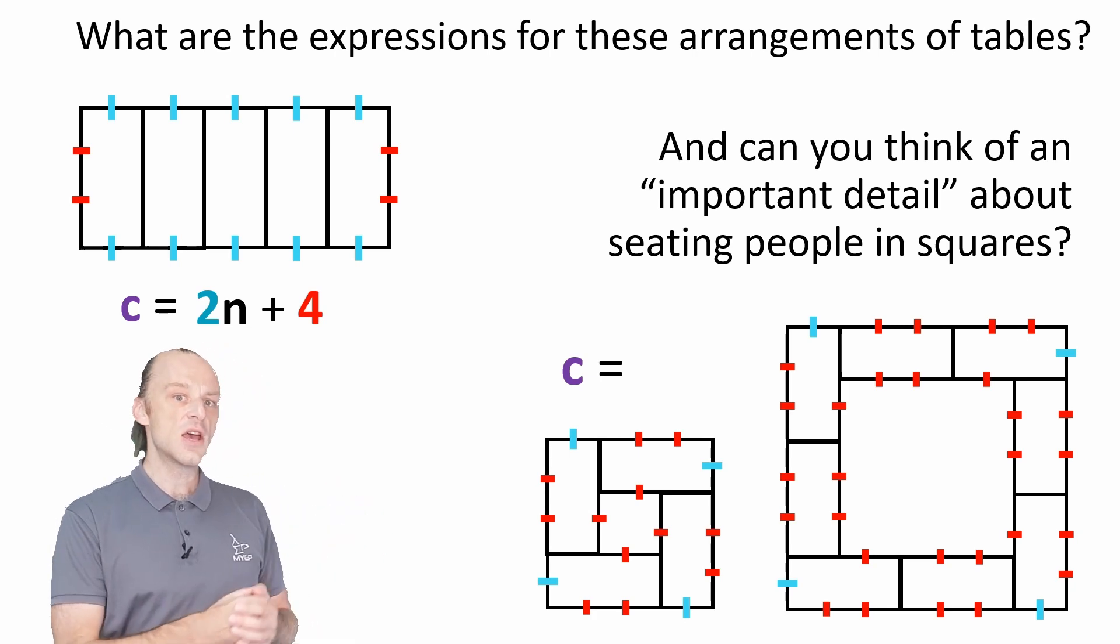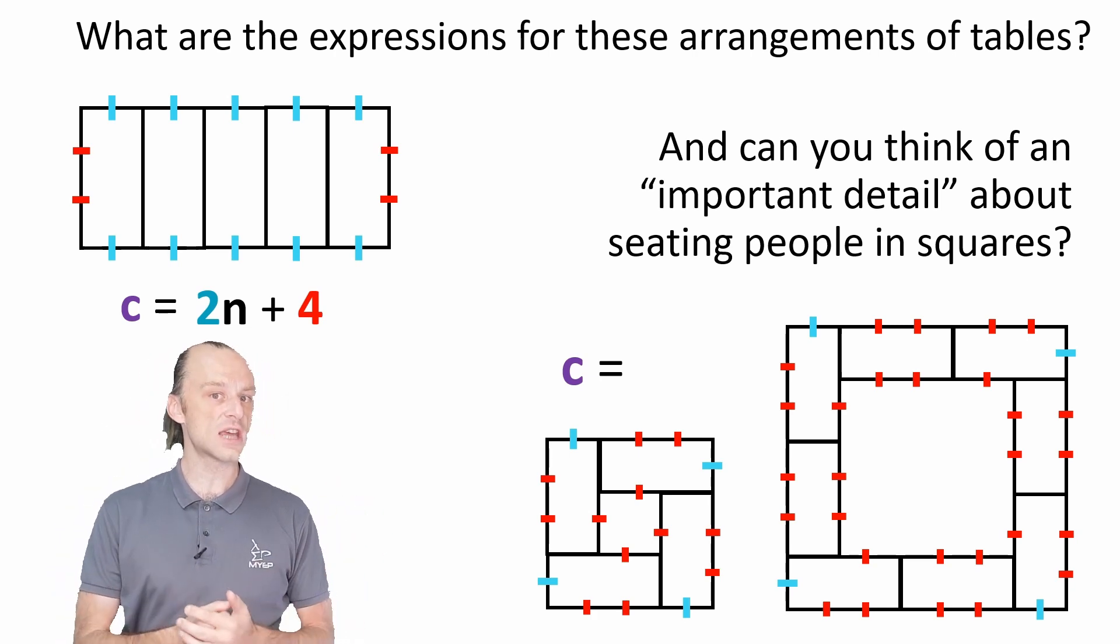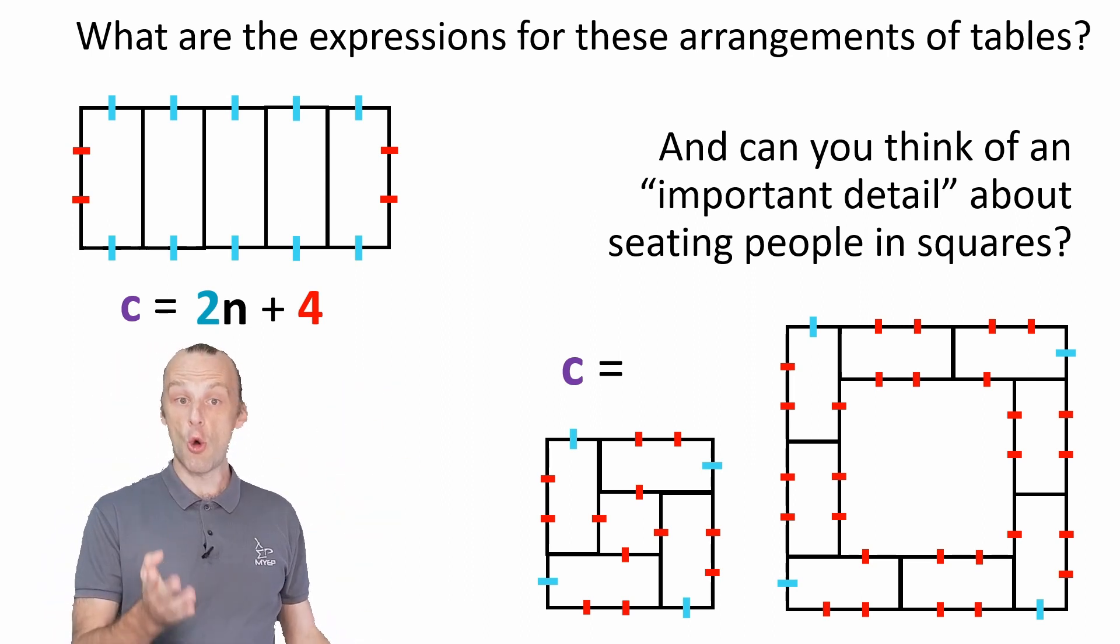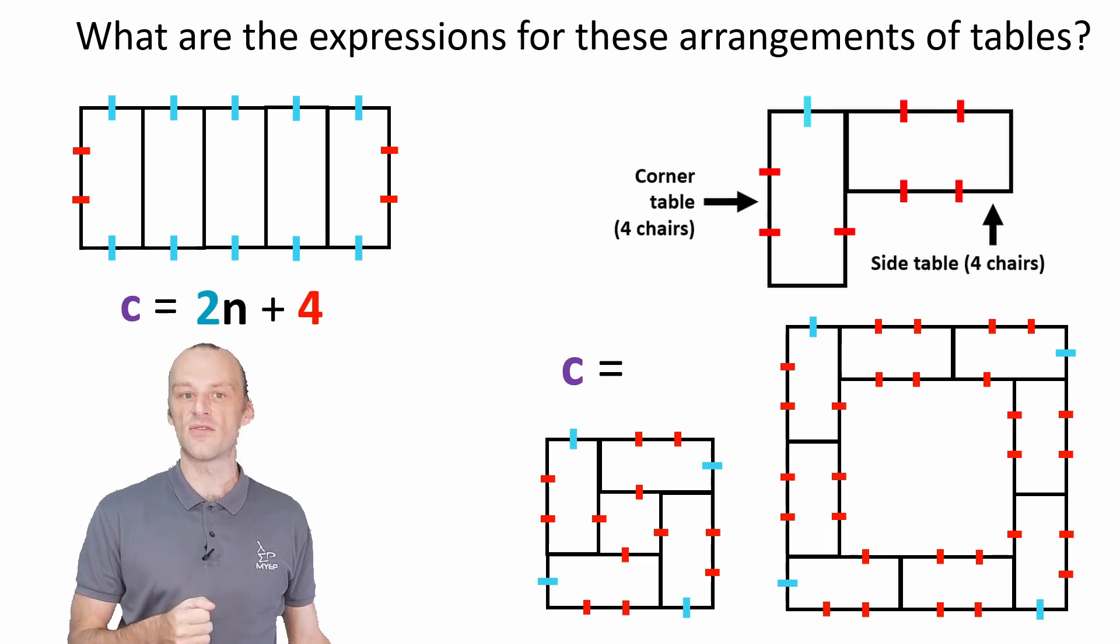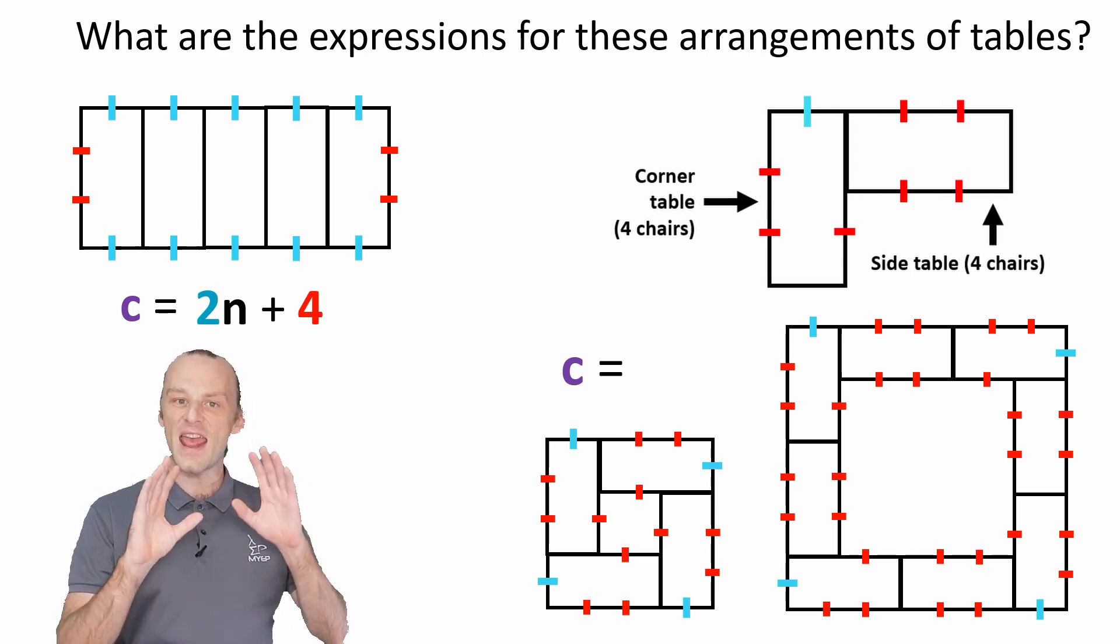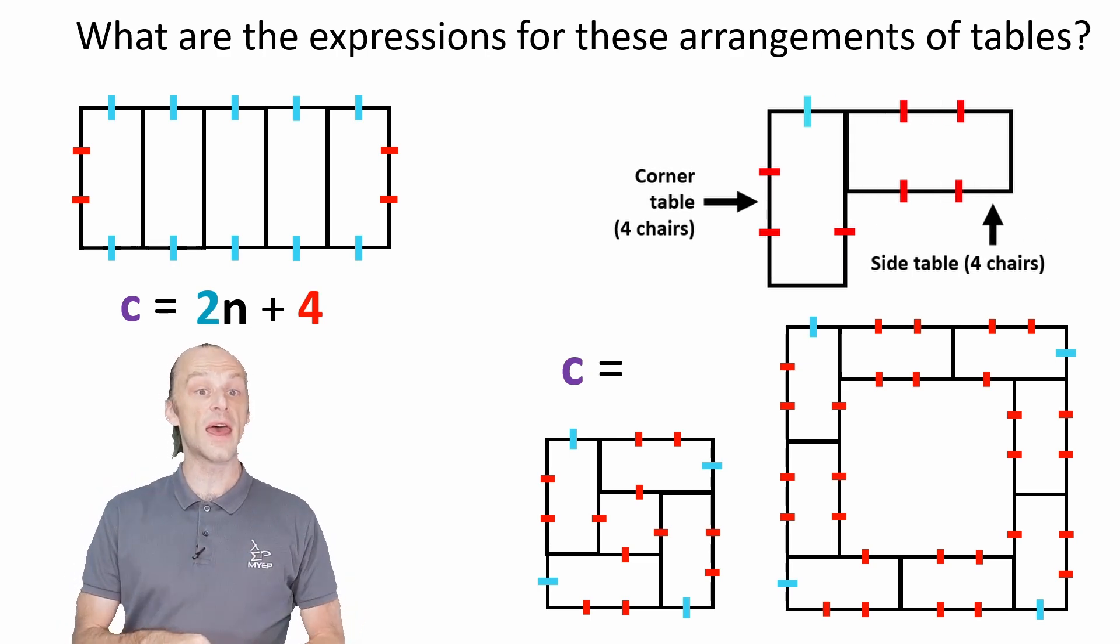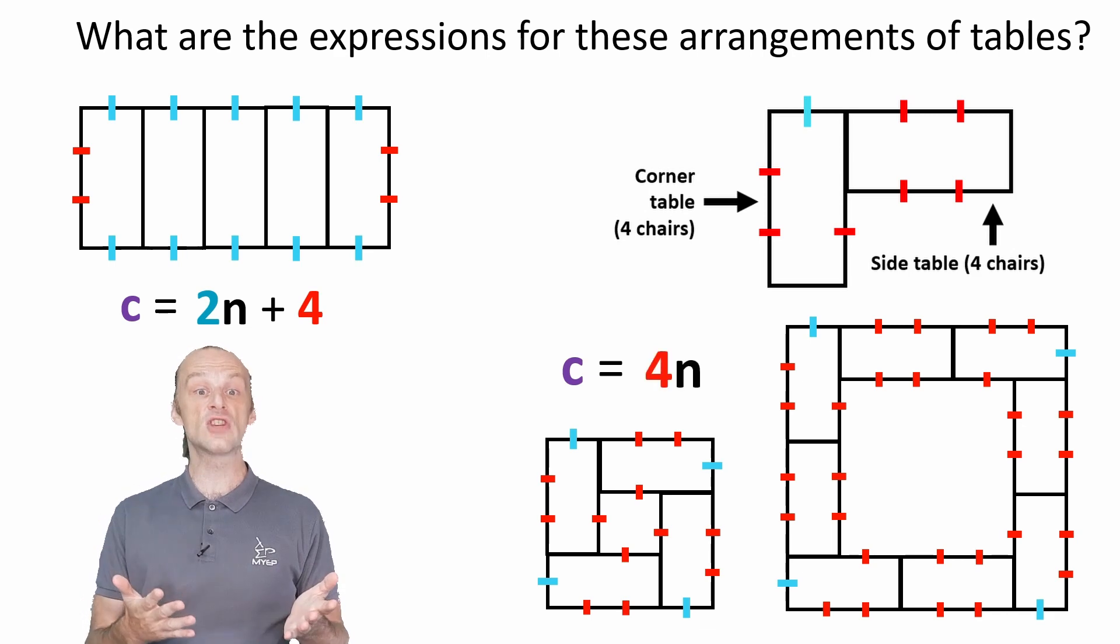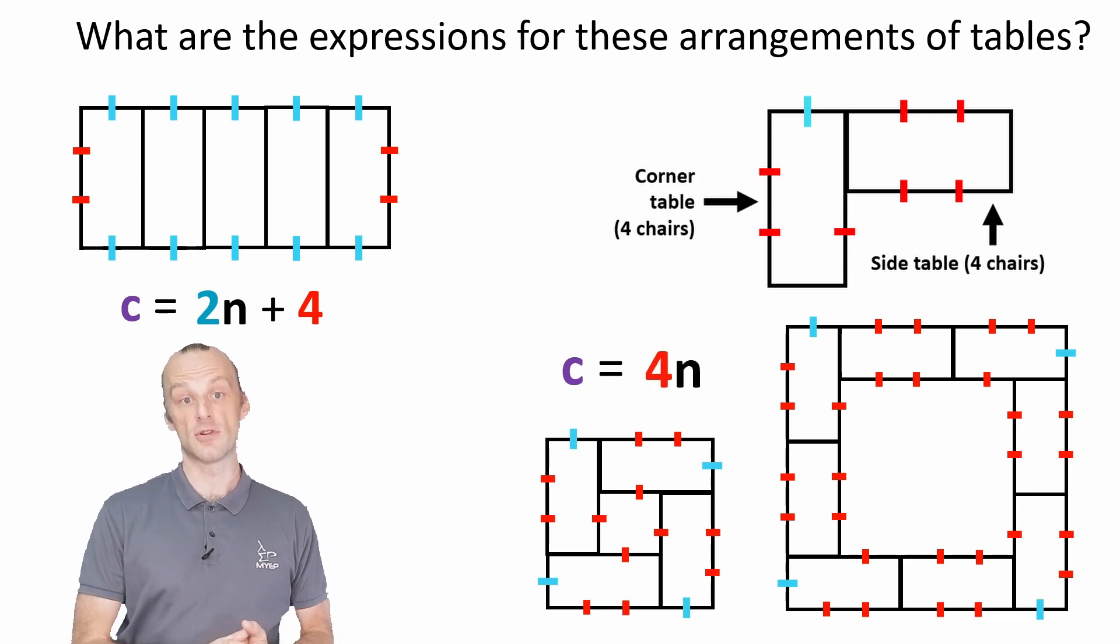In a square, you might notice that all the tables in the square lose two seating places. In the bigger square, the corner tables look a little bit different to the side tables, but every table around the square has four chairs. So the expression for C is simple, 4n. The number of chairs is four times the number of tables.